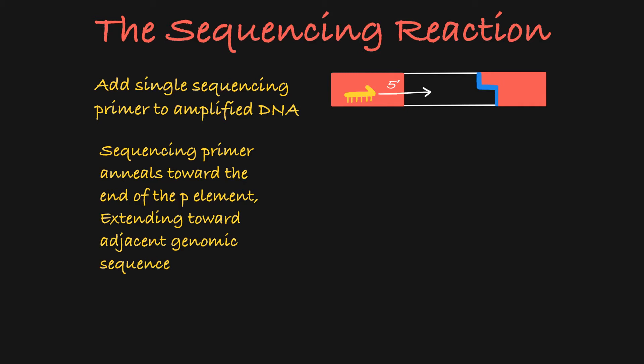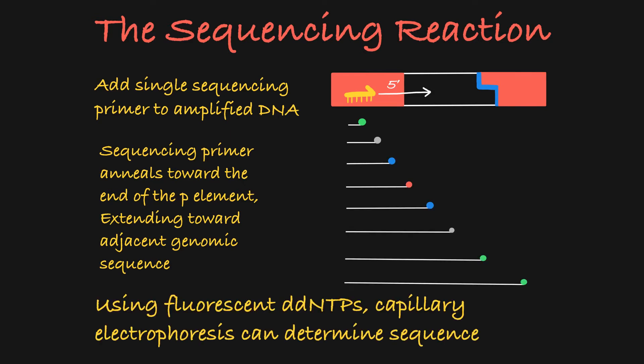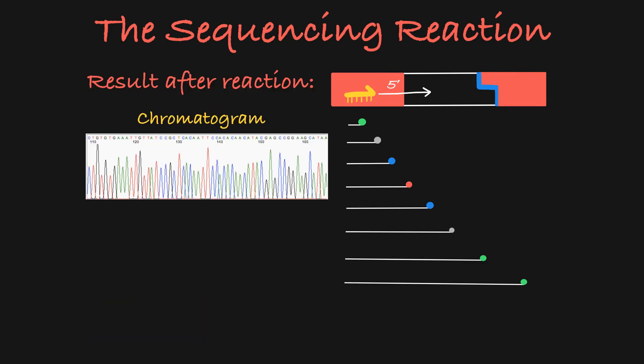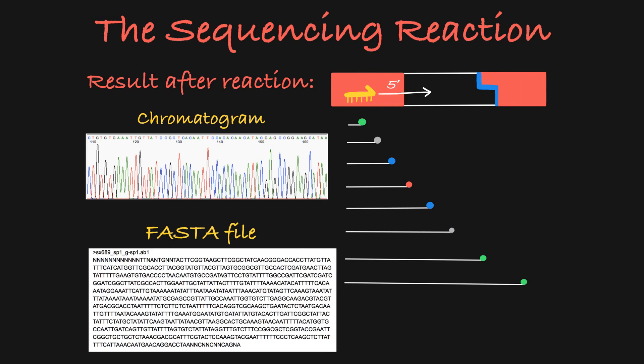Through the use of fluorescently labeled ddNTPs, the reaction produces a series of DNA molecules of different lengths, making the sequence of bases deducible after capillary electrophoresis. The result will come in the form of a chromatogram or a FASTA file, each showing you the sequence of bases built forward from your primer.